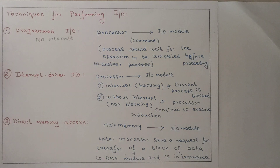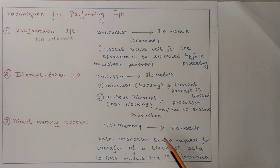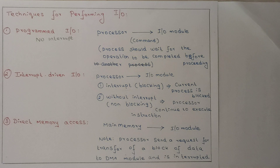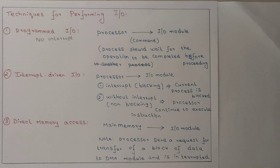In programmed I/O and interrupt-driven I/O, the processor is needed all the time. But in direct memory access, the processor is needed only at the beginning and after the entire block of data has been transferred. That is why the definition states: data transfer between input-output devices and memory happens without the intervention of the processor. Without intervention does not mean the processor is unaware — the processor does initiate the process, but after that it does not care about what is going on from the input-output devices to secondary memory. That is the concept of direct memory access.